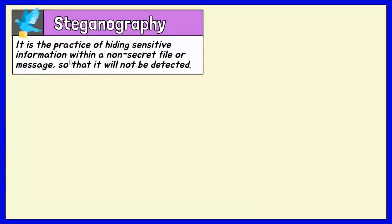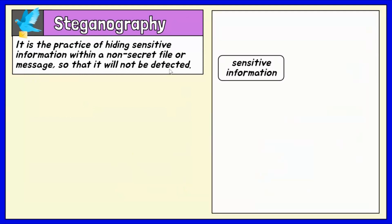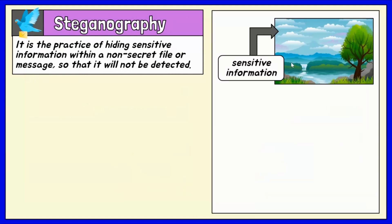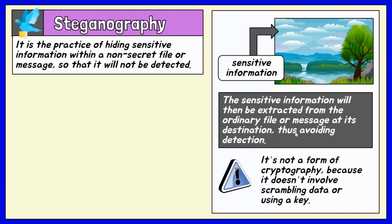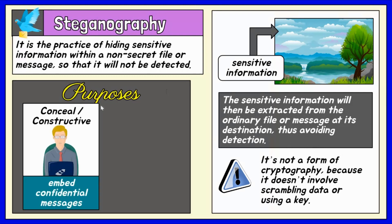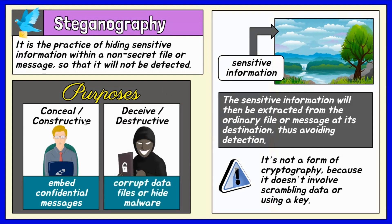Steganography is the practice of hiding sensitive information within a non-secret file or message so that it will not be detected. Many examples involve embedding a secret piece of text inside of a picture. The sensitive information is then extracted from the ordinary file or message at its destination, avoiding detection. It's not a form of cryptography because it doesn't involve scrambling data or using a key; instead, it is a form of data hiding and can be executed in clever ways.